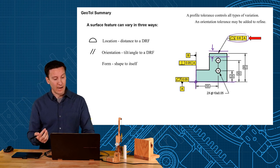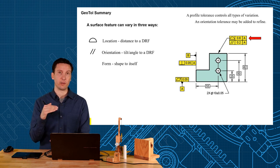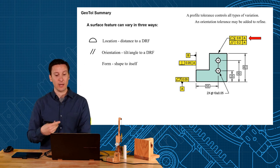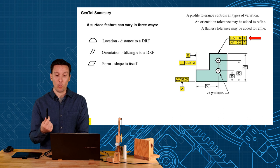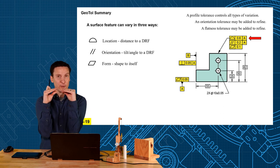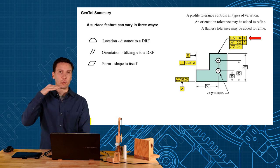Now if you want to you can add an orientation tolerance to this to refine. So parallelism could be added underneath. Now that's going to create another tolerance zone inside that controls the orientation. Now if you want to you can add one more and you can add a flatness of 0.1 and that's going to be another tolerance zone that floats inside and can be best fit to control just the flatness.